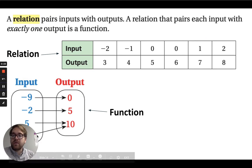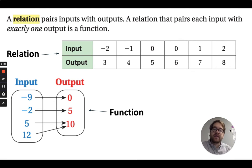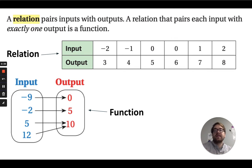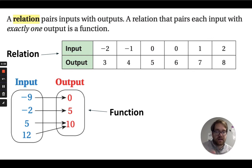Just as a review — a relation pairs inputs and outputs, any inputs and any outputs. But a relation that specifically pairs one input with exactly one output is a function. A relation could have one input that goes to multiple outputs, so it's not a one-to-one relationship — it's not exclusive in that way.